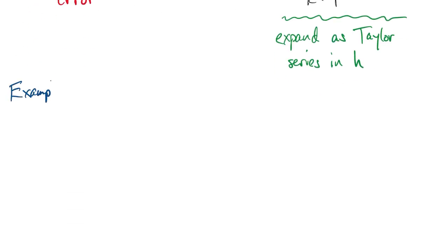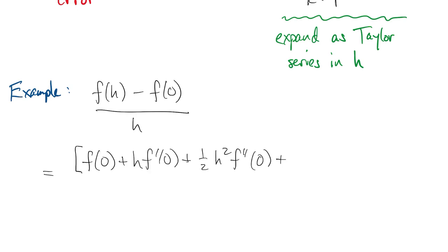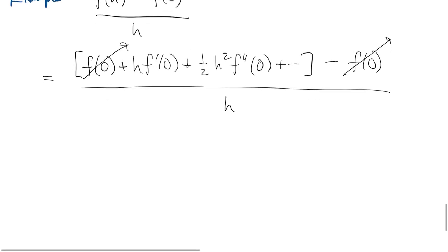For example, here is our first forward difference. The first term in the numerator depends on h, so we can expand it as a series. Then the f of zero terms cancel out, and the first remaining term is f prime at zero.